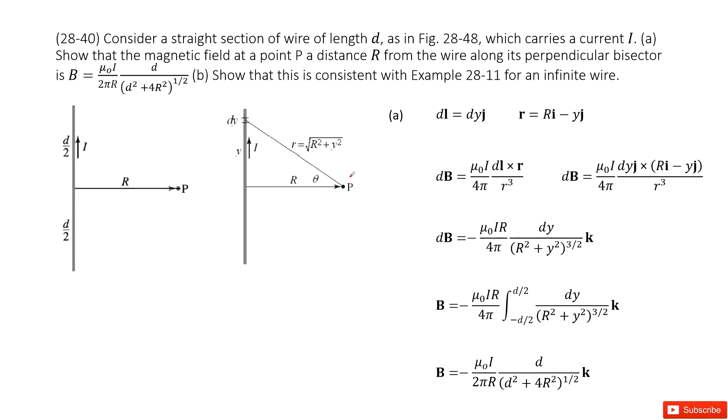The distance from dy to P we can write as r. So this is dl cross r at the top part. And dl is the length for this current, so we write it as dy j component.